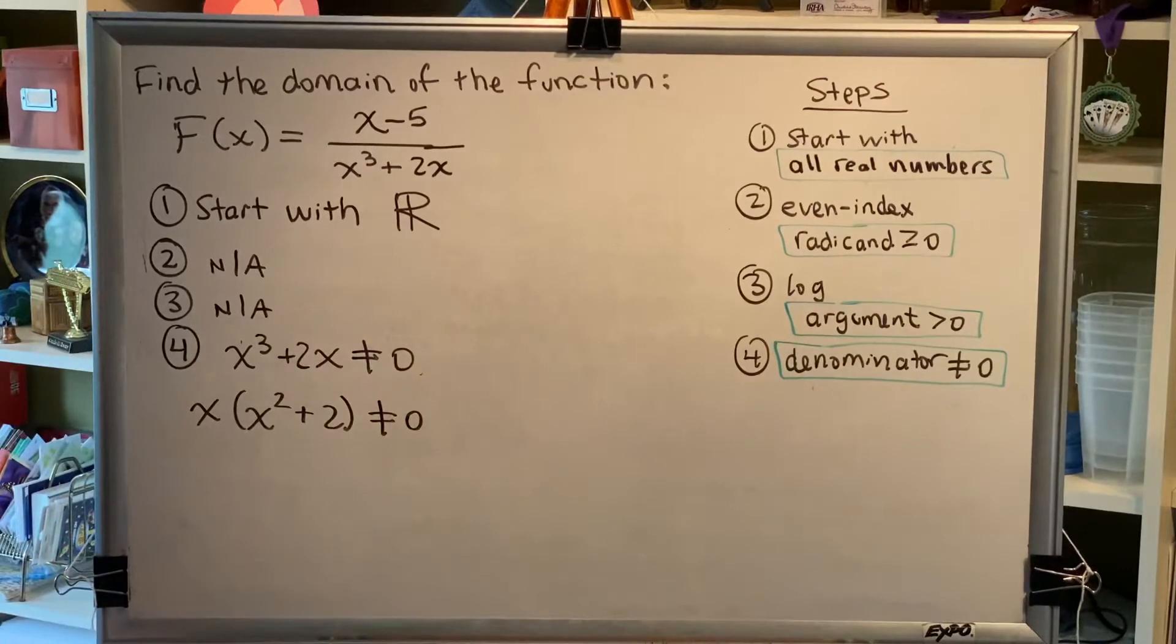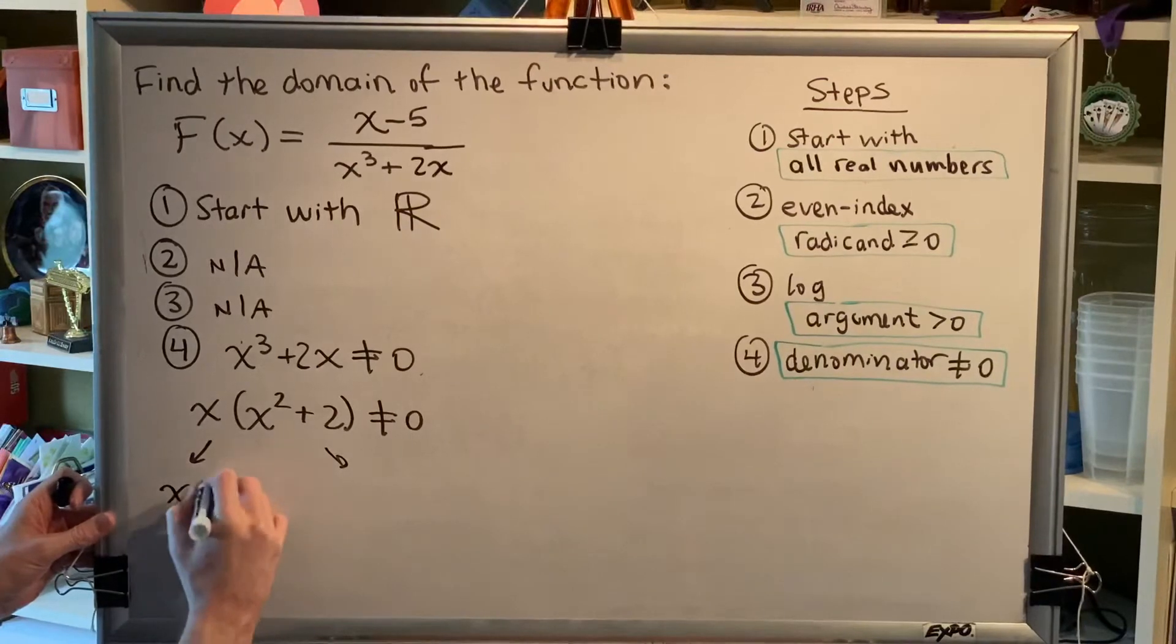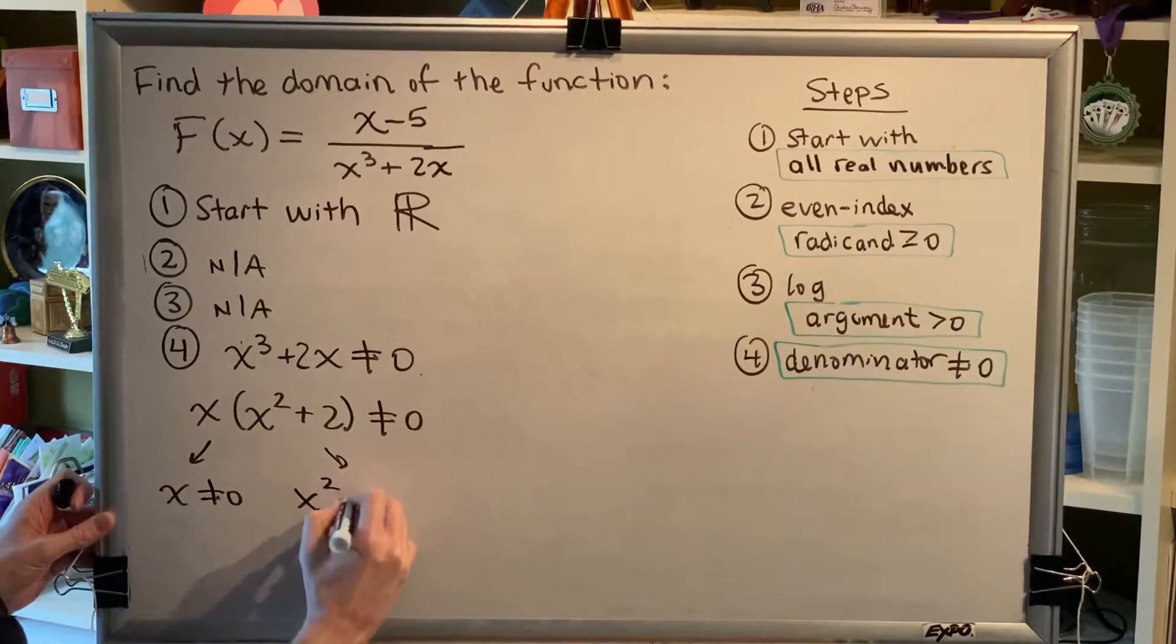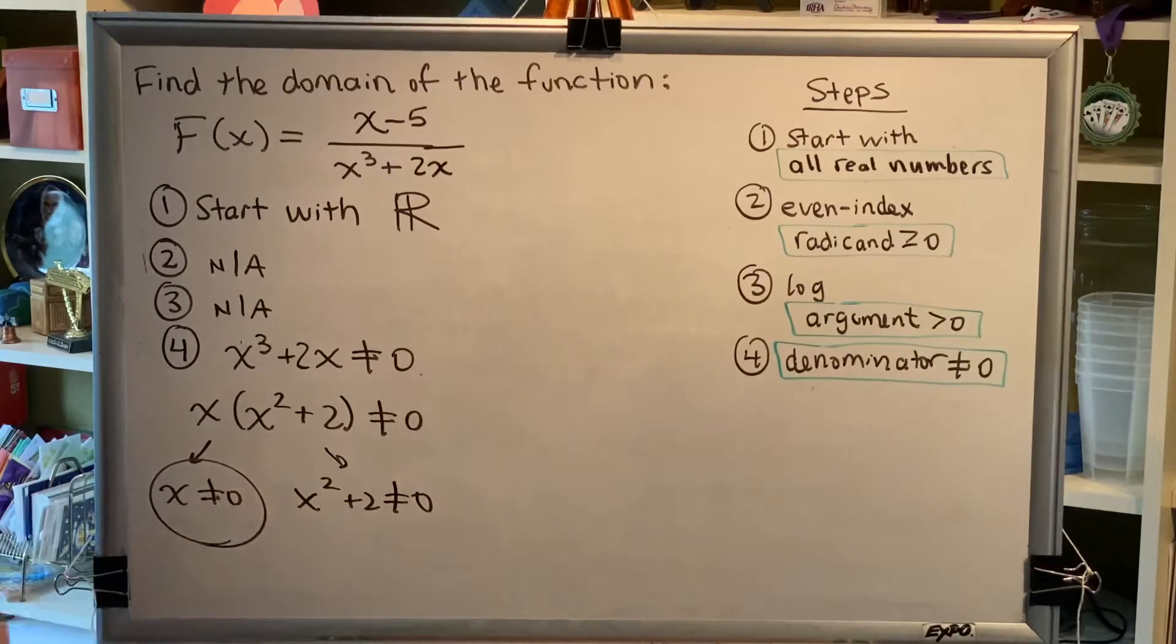We'll now use the zero product property and split this into two different statements. x is not equal to 0, and x squared plus 2 is not equal to 0. Notice that we've now learned something about our domain. We are not allowed to use x is equal to 0. But we have to continue solving this.